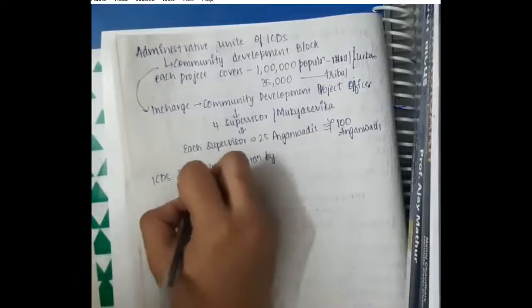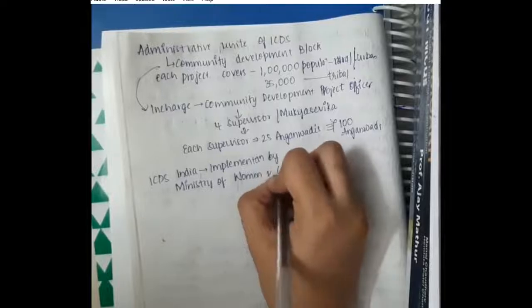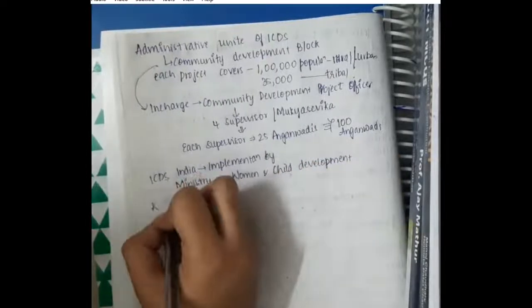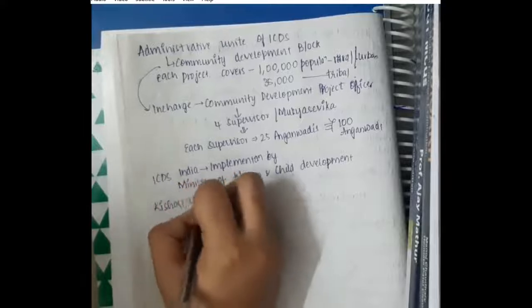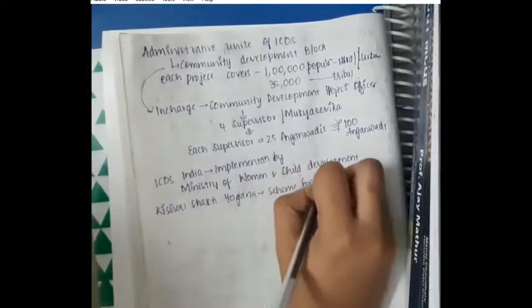ICDS in India is mainly implemented by the Ministry of Women and Child Development. Kishori Shakti Yojana is a scheme for adolescent girls under ICDS.